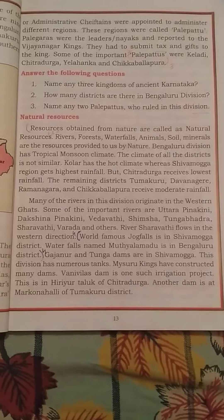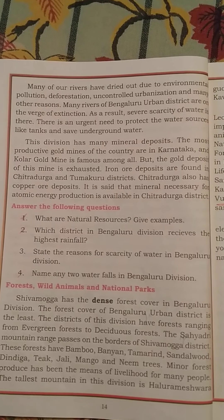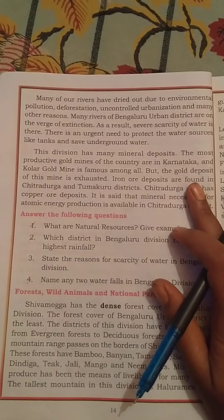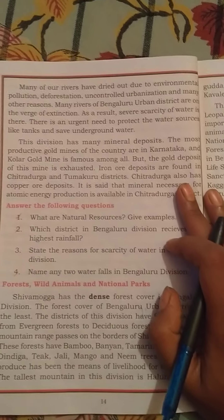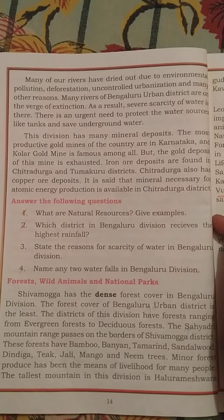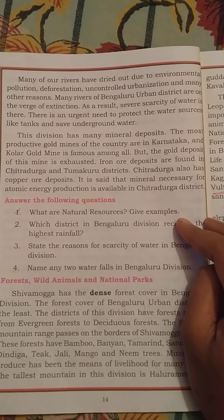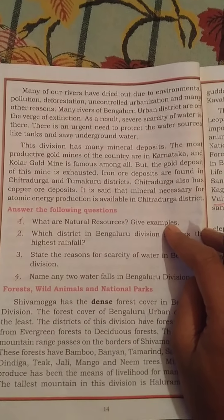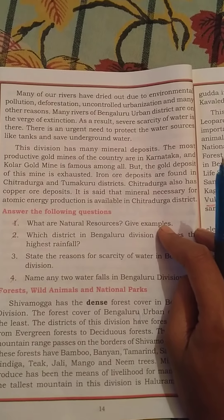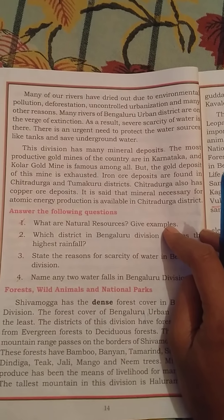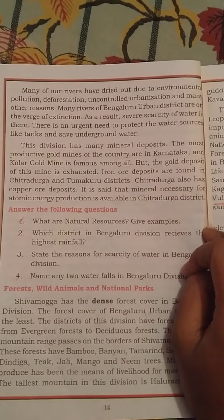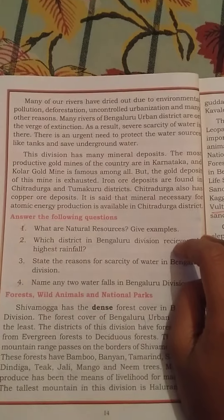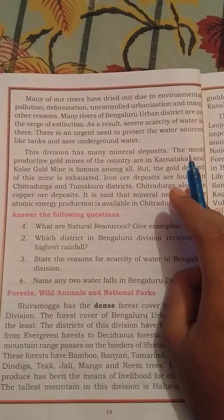Many of our rivers have dried out due to environmental pollution, deforestation, uncontrolled urbanization, and many other reasons. Many rivers of Bengaluru urban districts are on the verge of extinction. As a result, there is a severe scarcity of water. There is an urgent need to protect water sources like tanks and to save underground water.